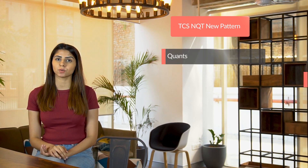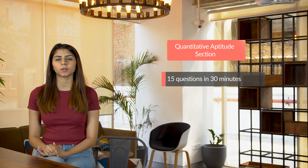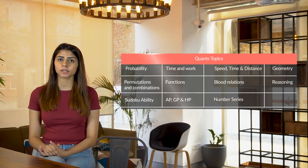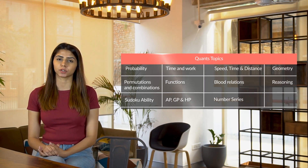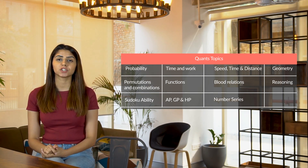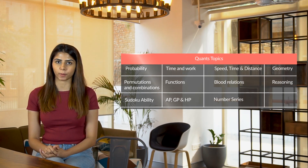As per the new TCS NQT pattern there are four sections: quantitative aptitude, verbal, CMCQ, and coding. The aptitude section has 15 questions and you get 30 minutes to attempt it. There is no separate logical section — topics like blood relations are covered within this section. The most important topics for this section are probability, time and work, speed, time and distance, geometry, and others mentioned on screen. This section needs to be practiced very well.